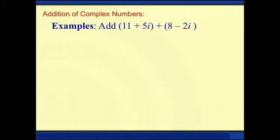So let's say I have 11 plus 5i, added to 8 minus 2i. To add these two complex numbers, all we have to do is combine 11 and 8, and combine 5i and negative 2i separately.